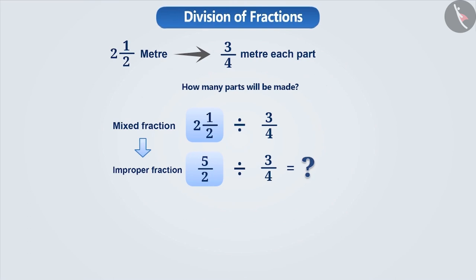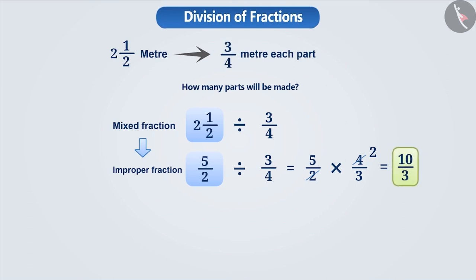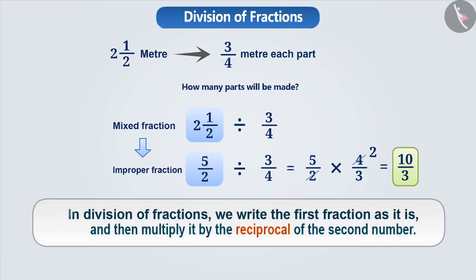We will keep the first fraction as it is, then change the division sign to a multiplication sign and write the other fraction as the reciprocal. That means five by two divided by three by four is equal to five by two into four by three, which is ten by three. That is, from a two and a half metres long ribbon, we will be able to make ten by three pieces, each measuring three-fourth metre. We can say that in division of fractions, we keep the first fraction as it is and multiply it with the reciprocal of the second fraction.